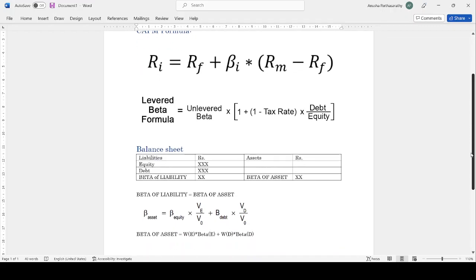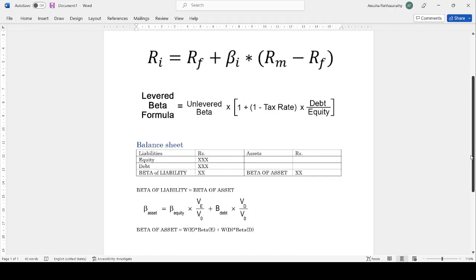So we prefer understanding using the balance sheet approach where we know that the balance sheet consists of two basic sides. One side will be full of assets, another side will be equity and liabilities. Basically, the assets are financed by the equity and liability. Therefore, the beta of liability side should be equal to the beta of the asset side.